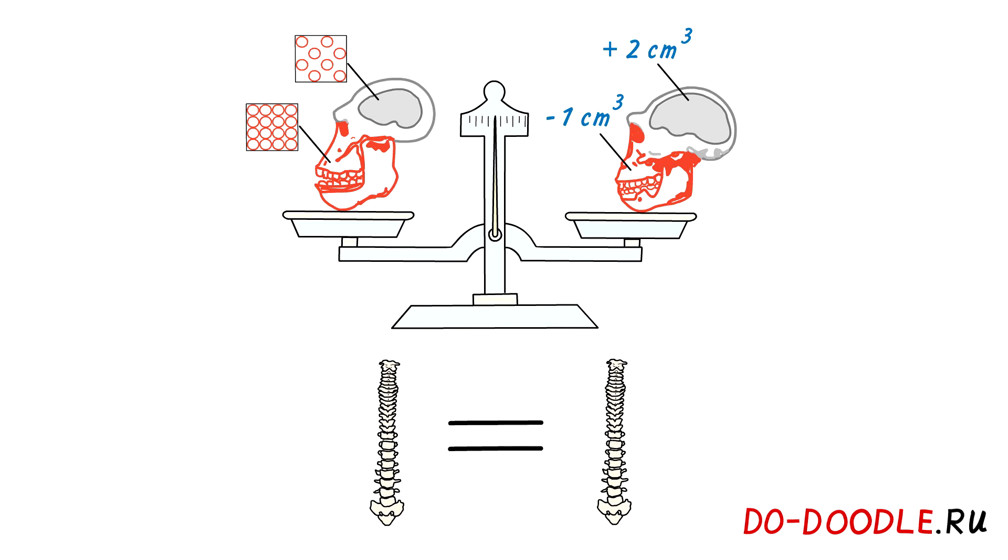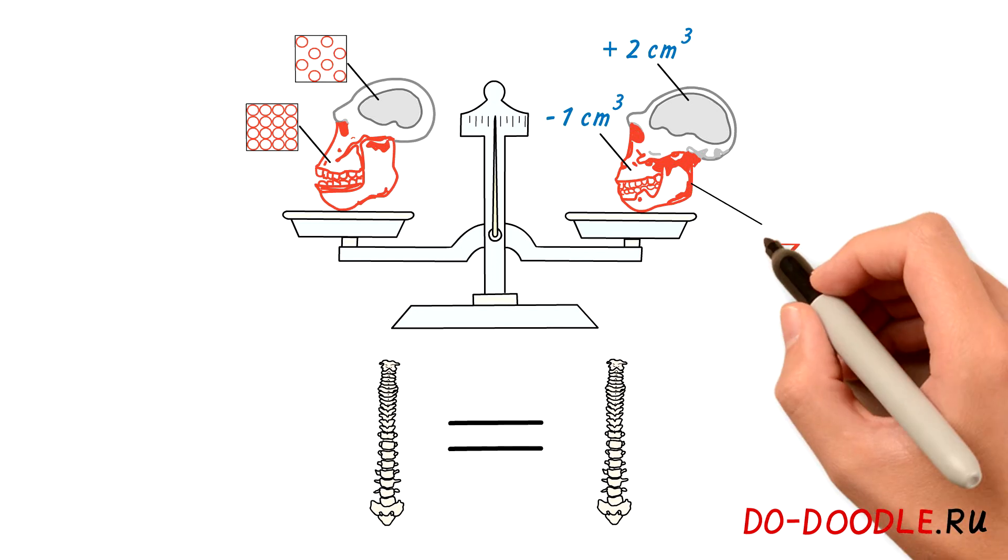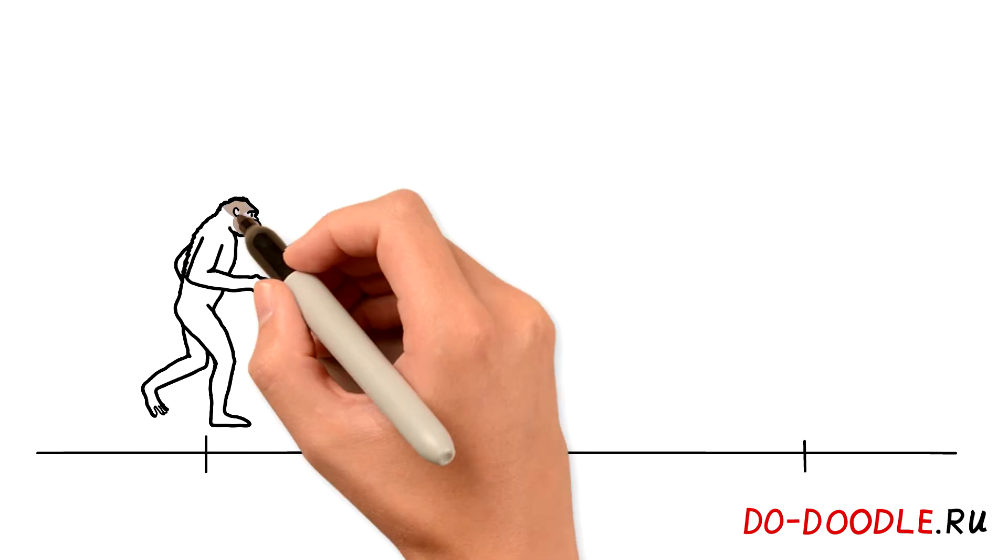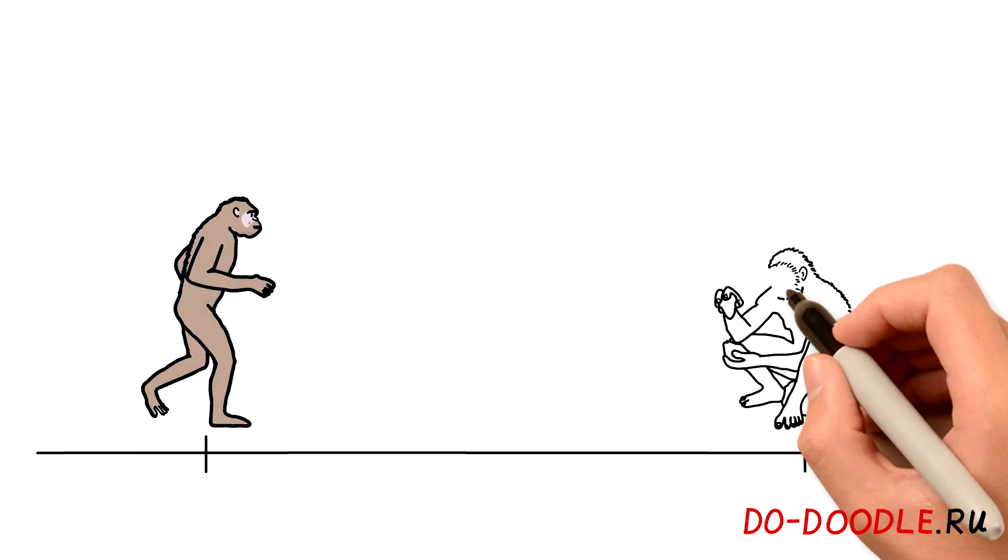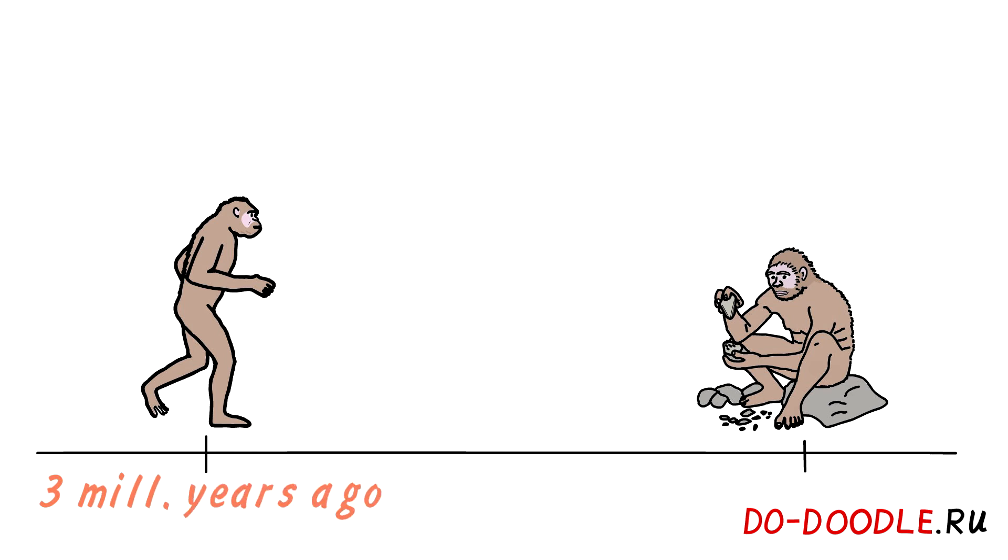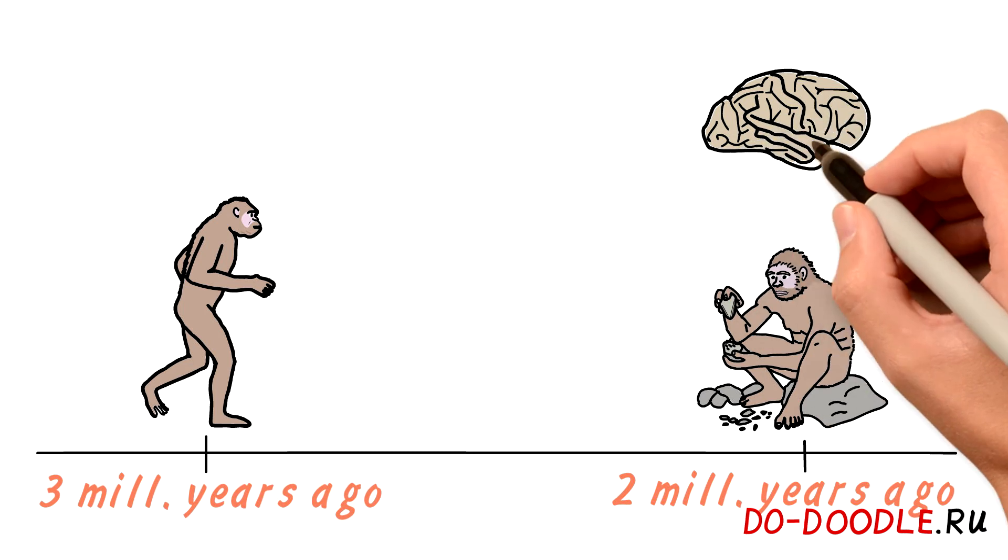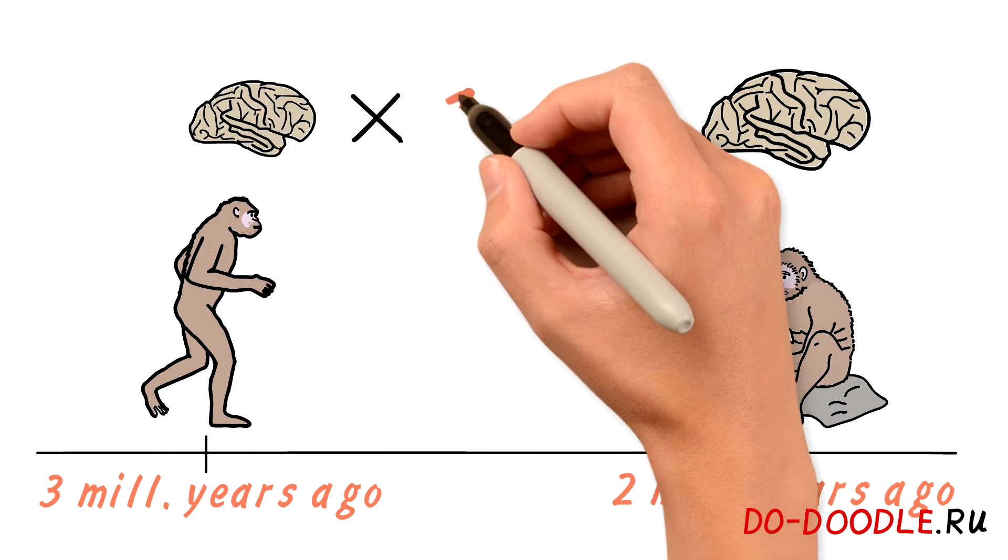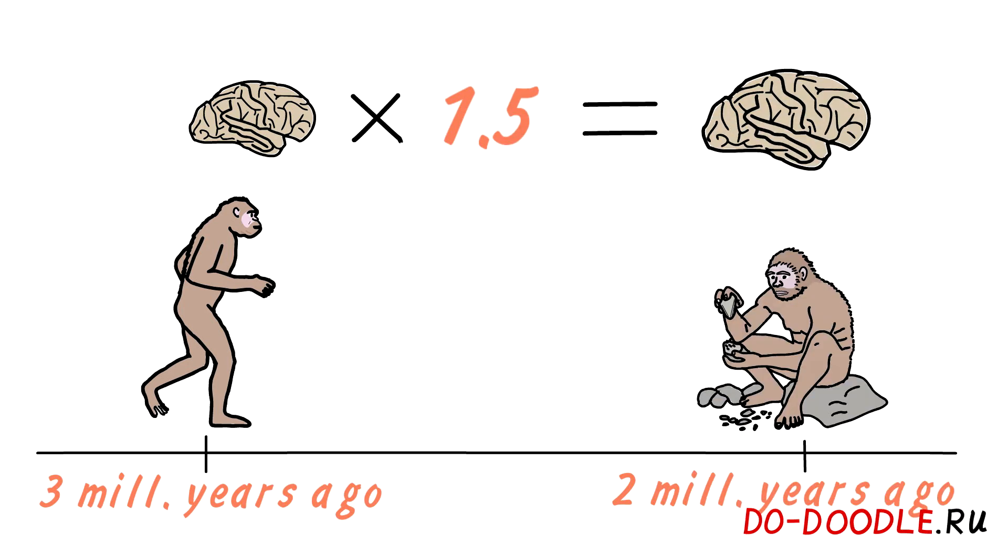So as you can see, while the jaws were only reducing a little bit, the brain size was skyrocketing. So yes, the brain growth was a necessity, but there were also favorable conditions for this to occur. And approximately two million years ago, the brain of first hominids, who were actively hunting and producing stone tools, was already one and a half times bigger than their predecessors, australopiths.